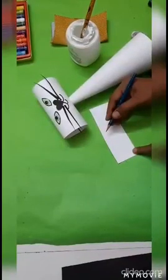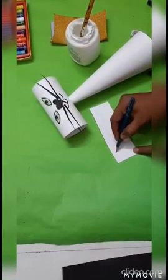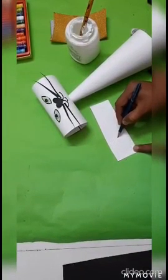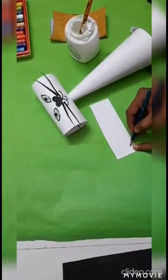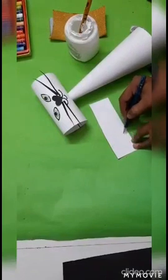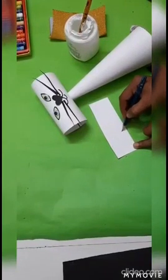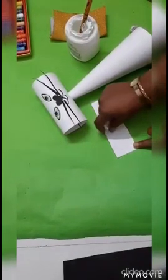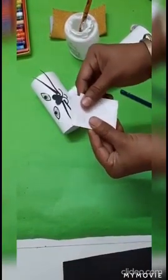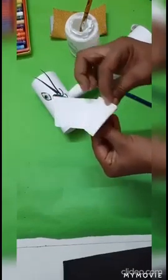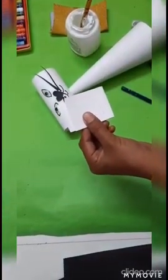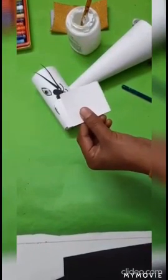Now we will make ears of the cat. So on the white color paper, I will draw a rectangular shape, which is a little bit curved like this. This I have drawn with the pencil. I will fold this paper like this so that I will get two shapes of this ear, and with the help of scissors, I will cut it.